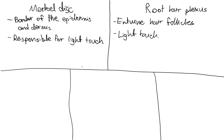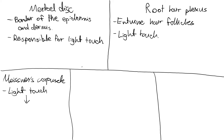The next receptor I want to talk about is called a Meissner's corpuscle. A Meissner's corpuscle is also responsible for light touch, but it is only localized to areas of the body where there is hairless skin. An example would be certain areas of the face, which usually never grow hair. Meissner's corpuscles can be abundant there and, in addition to Merkel disks, allow for greater sensitization to light touch and sensation of any pain in those areas.